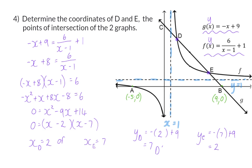So point D will be the coordinate (2, 7) and E the coordinate (7, 2). In the next video, we're going to have a look at some more questions about these two graphs.